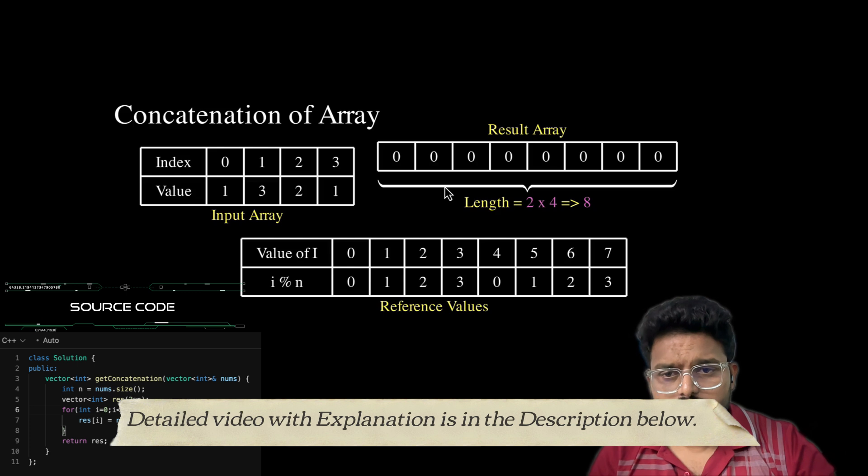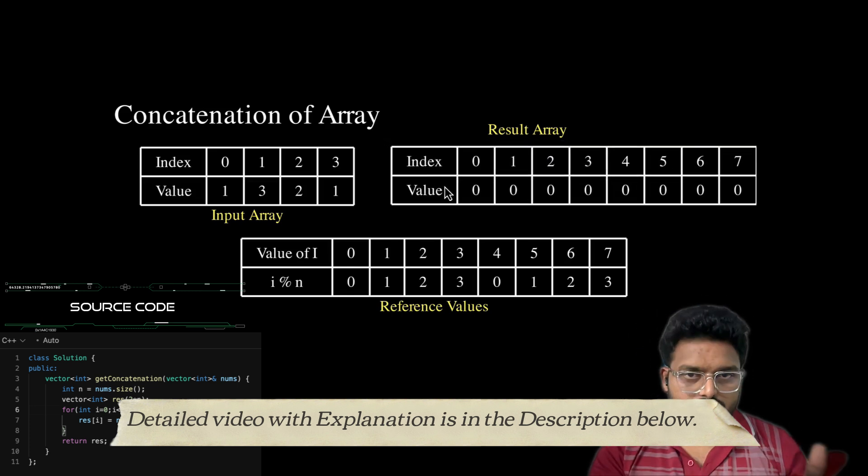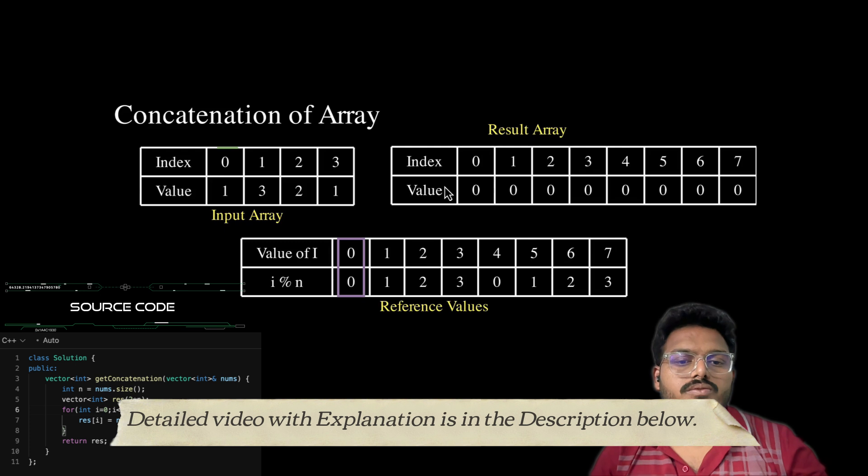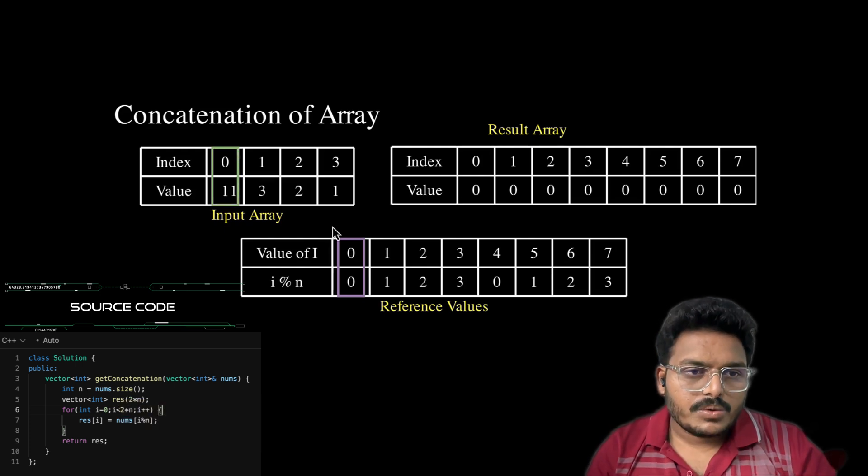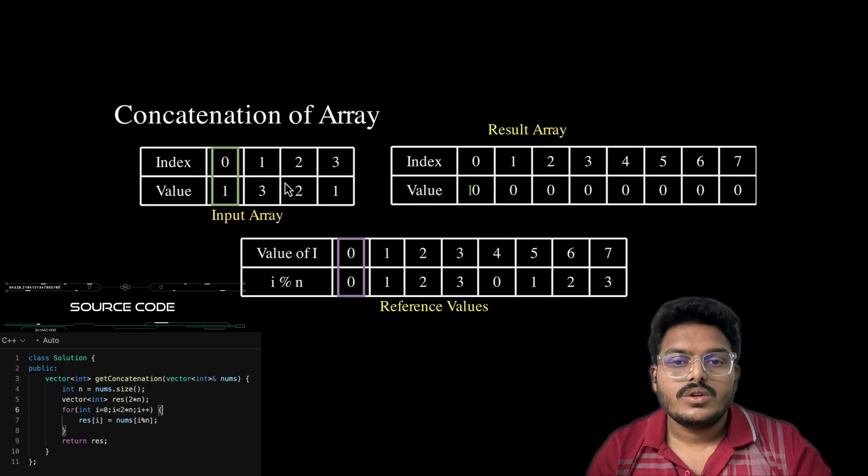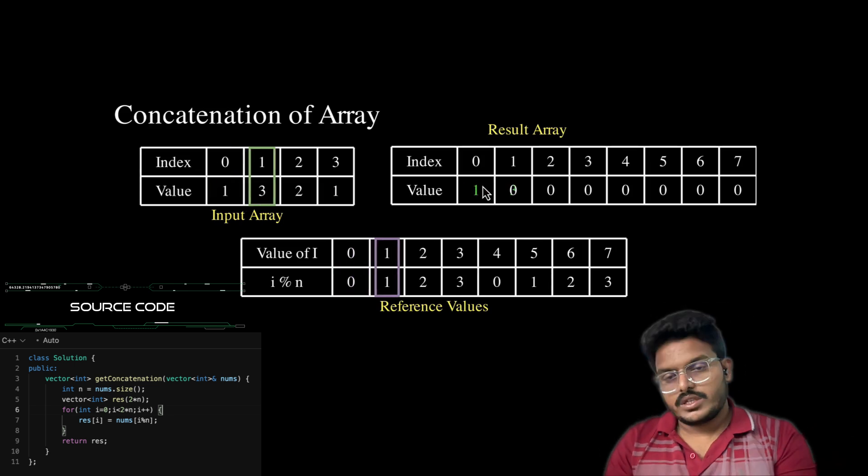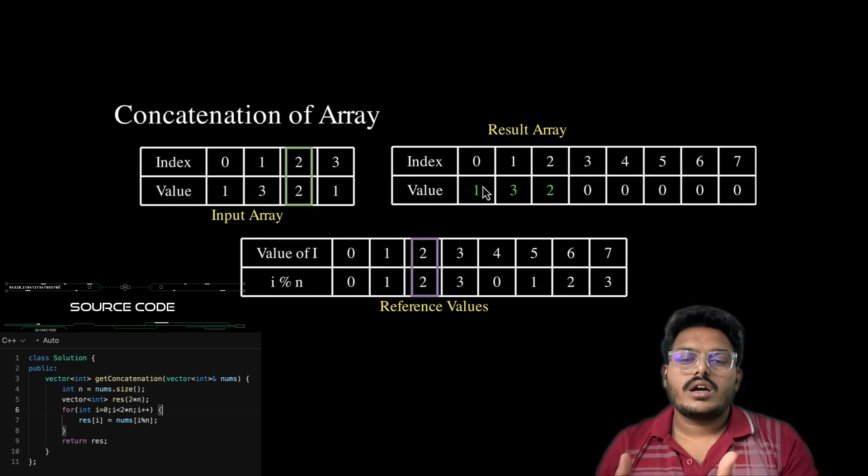For i value 0, it will take i mod n. 0 mod 4 is 0, and it will take the value from index 0 to the 0 location of the result array, value from 1 to the first location, 2 to the second location. The i value is incremented to 3, and the third value is transferred.